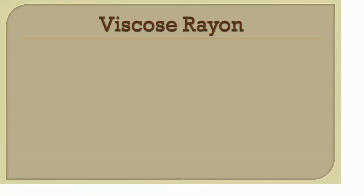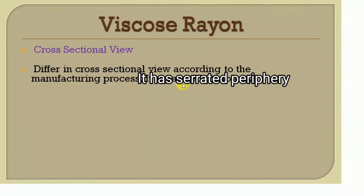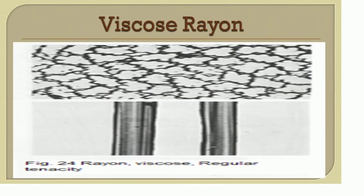Viscose rayon fiber differs in cross-sectional view according to the manufacturing process and has a serrated periphery — meaning sharp edges in cross-section. In longitudinal view, rayon fiber has a glass-like lustre, appears to have uniform diameter, and sometimes shows striations or fine lines in the longitudinal direction. In the image, the sharp edges in cross-section are clearly visible, and the striations or line markings in the longitudinal direction can also be seen.